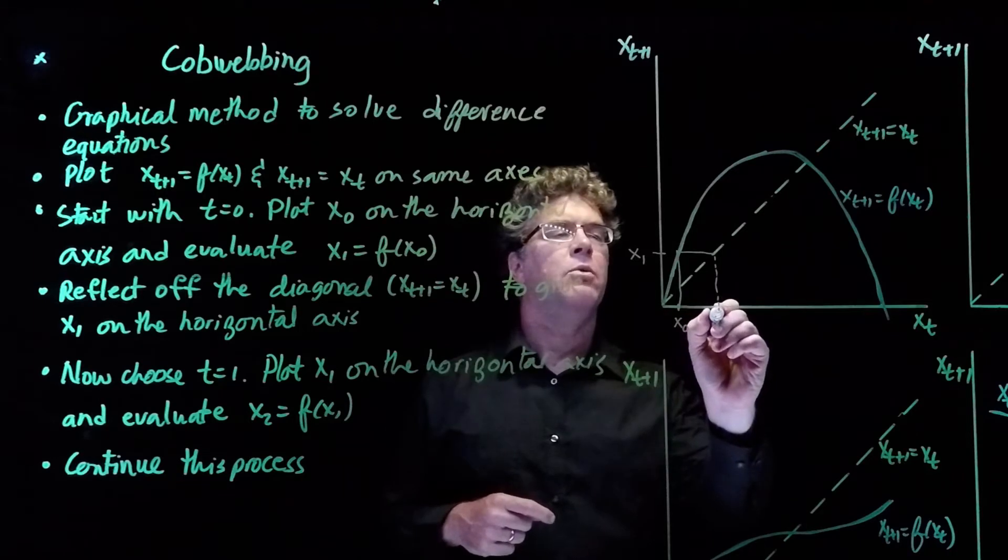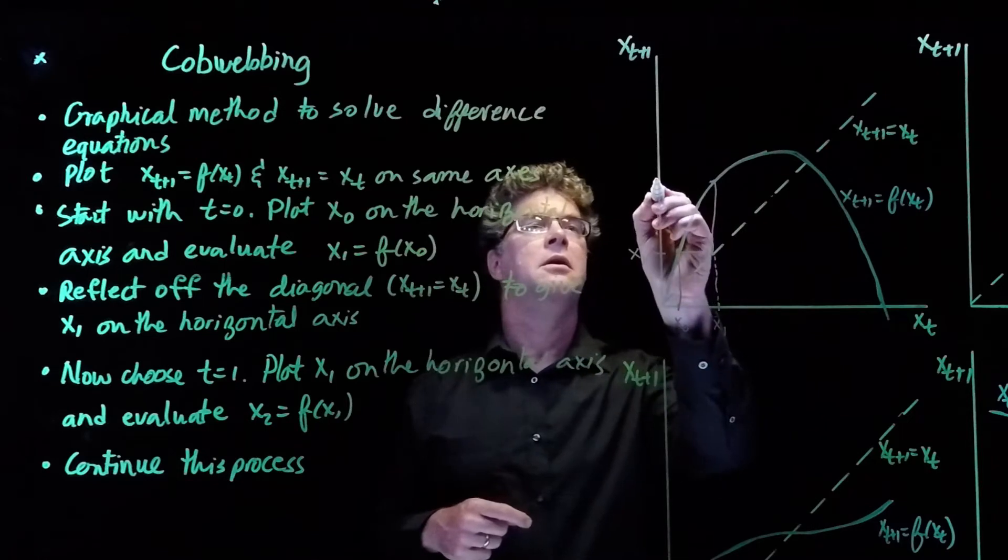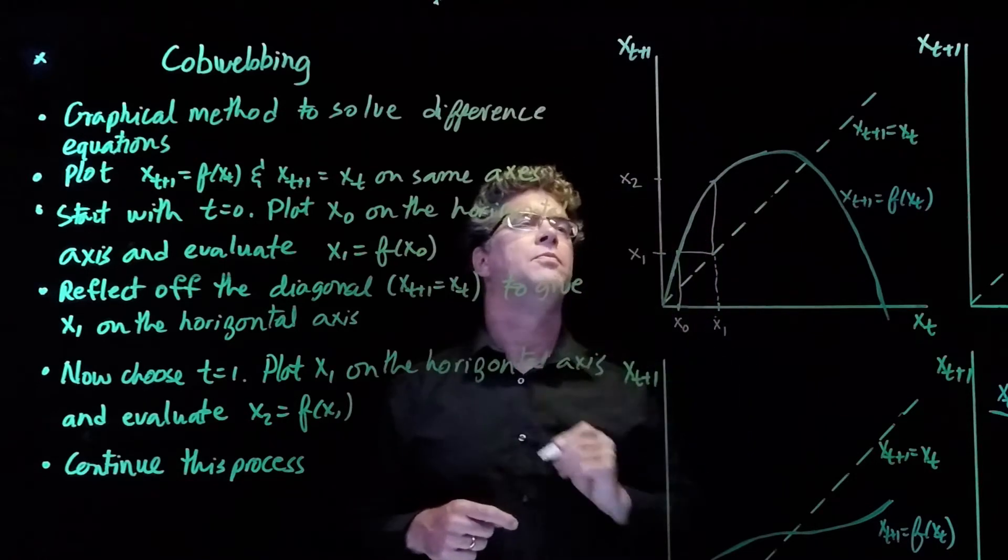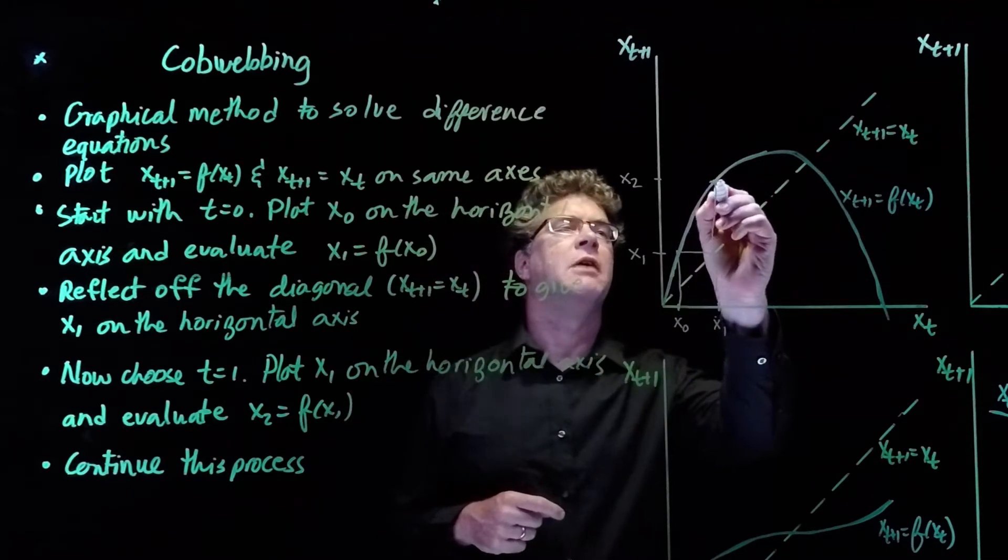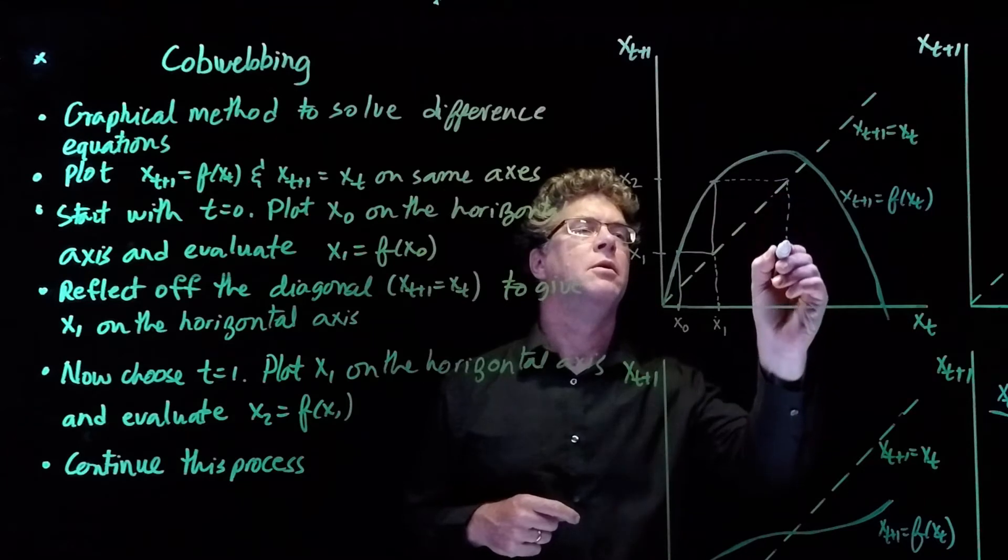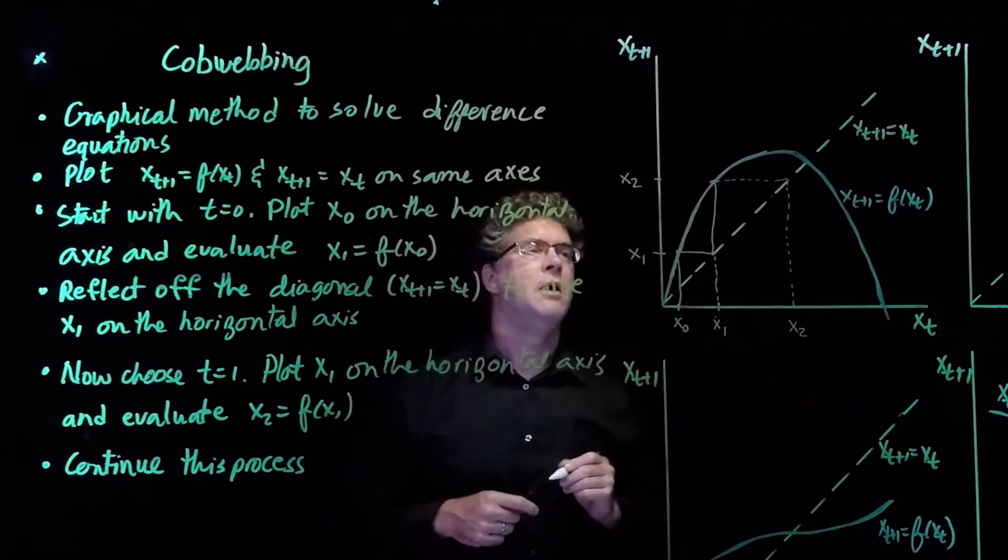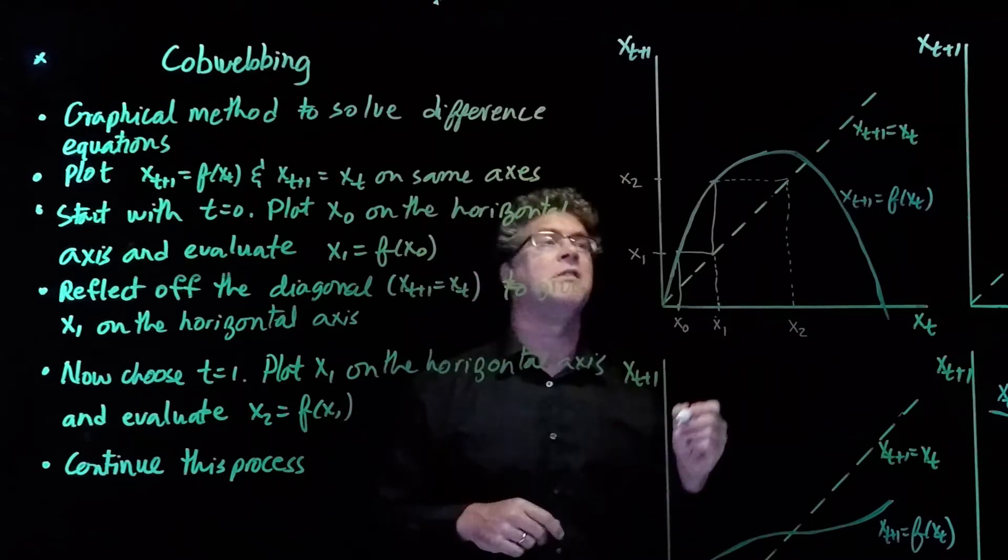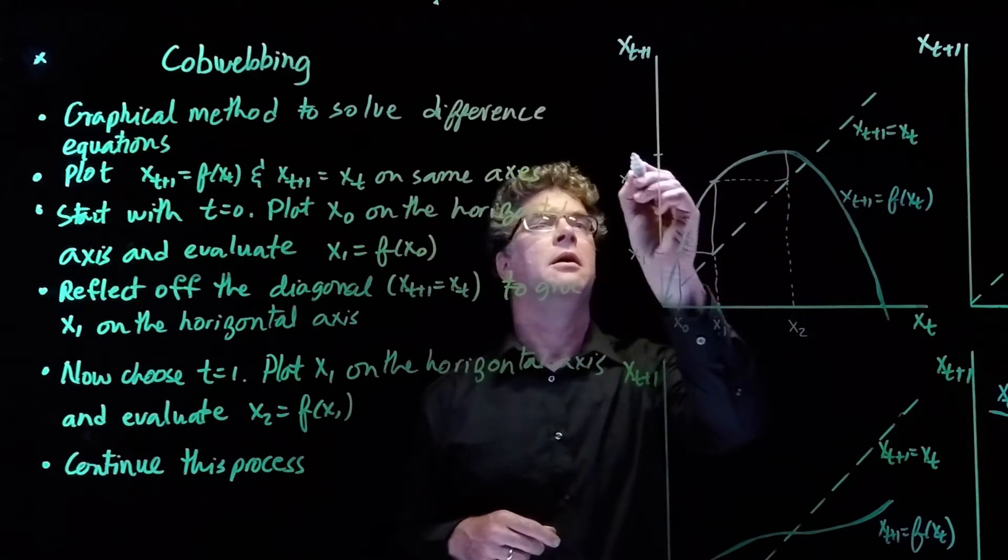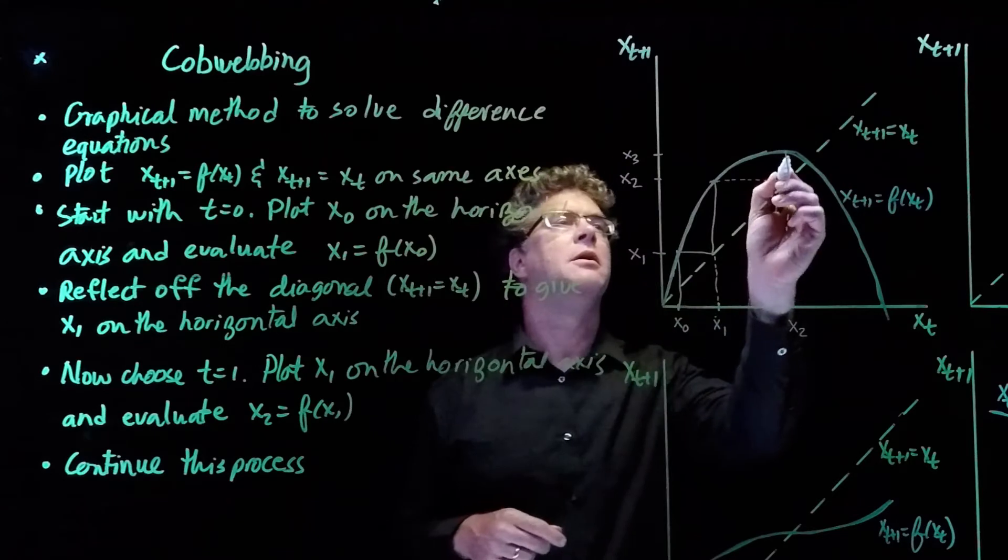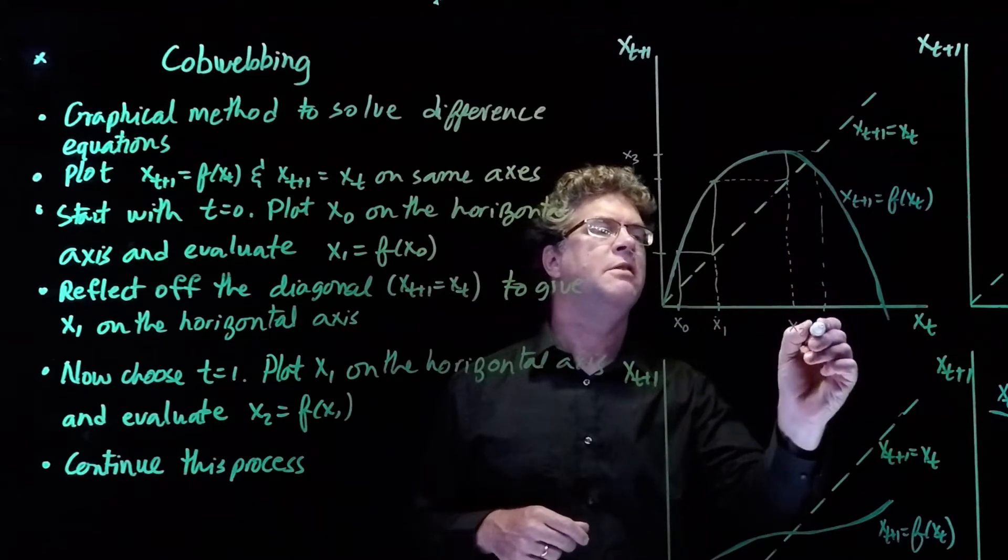And then we go up from x_1 to get f(x_1), which is x_2. Reflecting off the 45 degree line again, we're going to have x_2. And we keep doing this process, and so if we go back up here, we'll get x_3 is right here, and then we reflect off the 45 degree line, and this is x_3 right here.